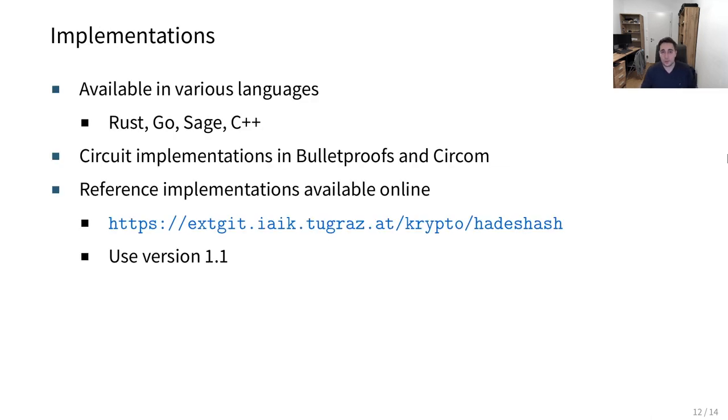What about implementations? We have our hash function available in various languages, for example Rust, Go, Sage, and C++. We also have some circuit implementations available, and the reference implementations of the permutation are available online under this link here. Please make sure to use the version 1.1, since some minor things have been fixed in this version.